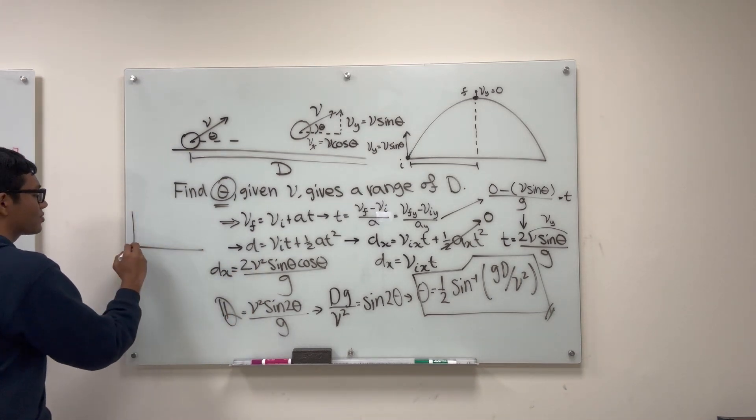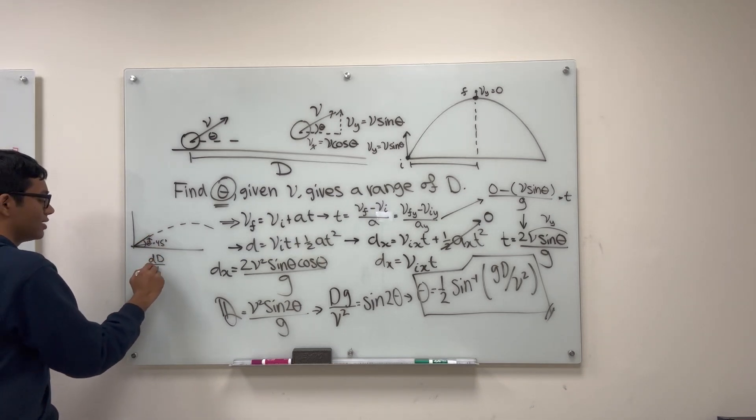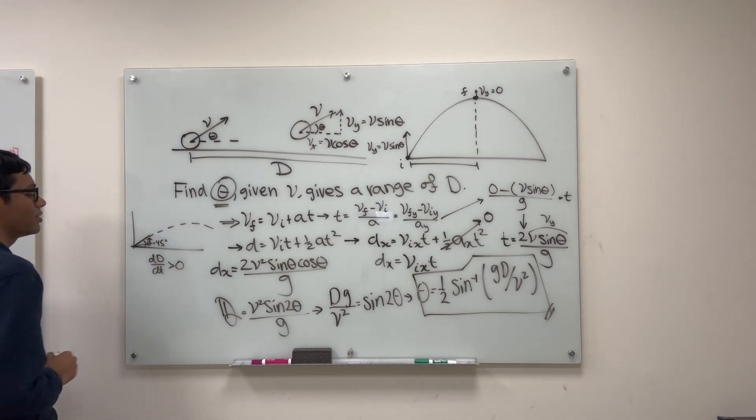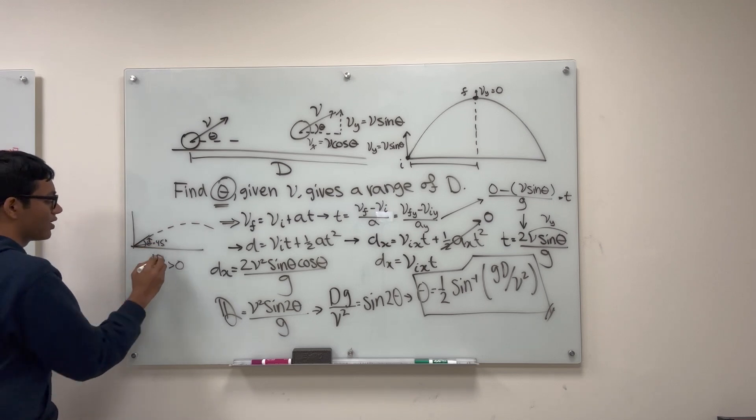Because the max range is achieved for theta is pi over 4 or 45 degrees. So if you're starting from below 45 degrees and going up to 45 degrees, then your range will increase. In other words, d d theta is going to be greater than 0 if you start from theta is less than pi over 4.